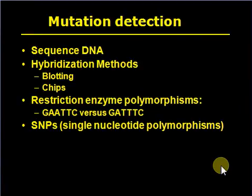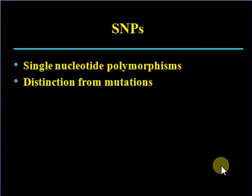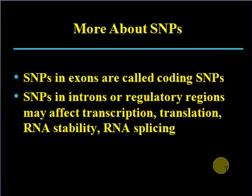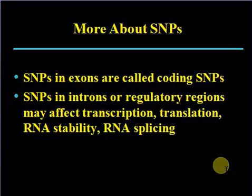Mutation detection methods include DNA hybridization techniques such as blotting and chips, and restriction enzyme polymorphism analysis, including single nucleotide polymorphisms (SNPs). SNPs are small single nucleotide polymorphisms distinguished from mutations. Allele-specific oligonucleotides (ASO) can be used to detect SNPs. SNPs in exons are called coding SNPs, while SNPs in introns or regulatory regions may affect transcription, translation, or RNA splicing.